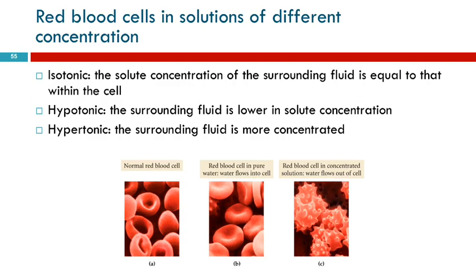If the red blood cells are in a solution that has a higher concentration than inside them, that's called hypertonic. The higher concentration draws water out of the red blood cells and causes them to shrink — they get all pokey and shriveled looking. That process is called crenation: when red blood cells shrivel up because they're in a solution that's too salty.